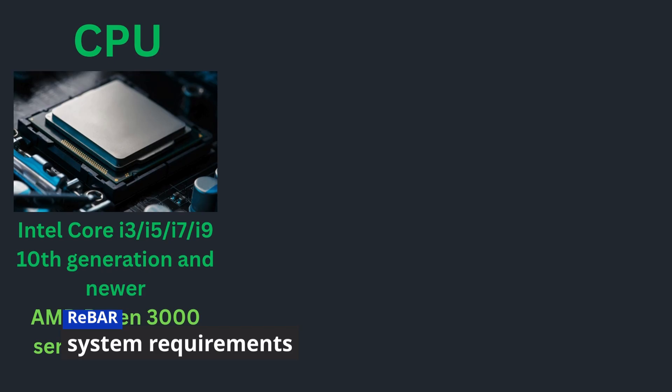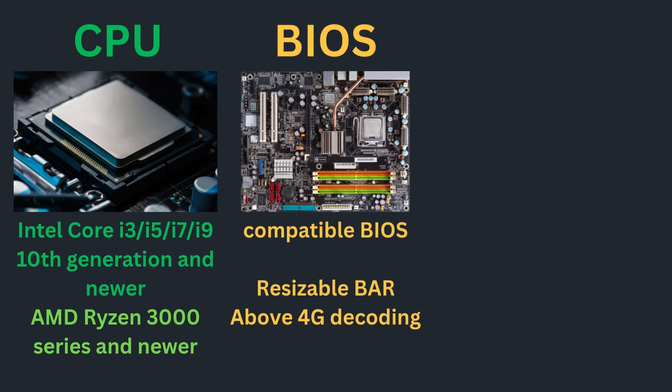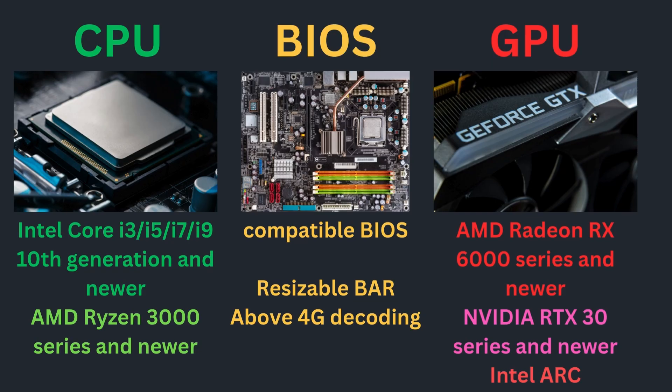To use rebar, there are certain system requirements. For the CPU, it needs to be an Intel Core i3, i5, i7, or i9 of the 10th generation or newer. If you have an AMD CPU, you will need a Ryzen 3000 series or newer. Besides the CPU, your BIOS also needs to support rebar — check the BIOS settings for a resizable bar option, or in some cases it's called the above 4G decoding option, and make sure those are enabled. For the GPU, you need an AMD Radeon RX 6000 series or newer, an Nvidia RTX 30 series or newer, or an Intel ARC — for Intel ARC, check the Intel website to confirm rebar support.